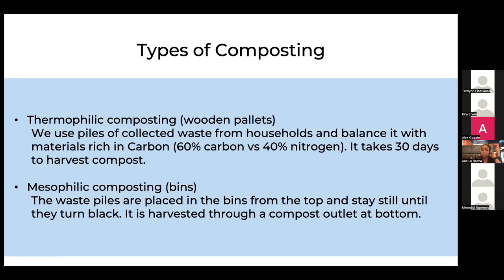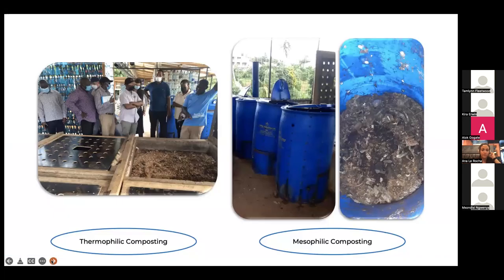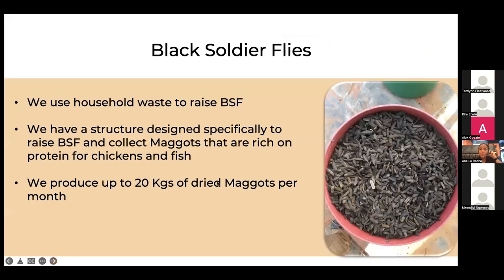We also use mesophilic composting in bins. The waste is placed in bins and not actively mixed — unlike thermophilic compost, which is mixed several times. The mesophilic waste just stays until it turns black, then we harvest it through an outlet at the bottom of the bin. The bins have holes so leachate can come out. We also produce black soldier flies, using household organic waste to raise them.